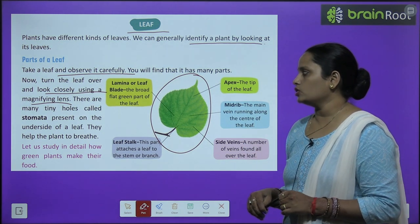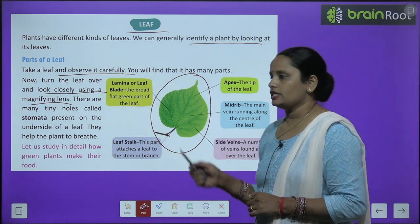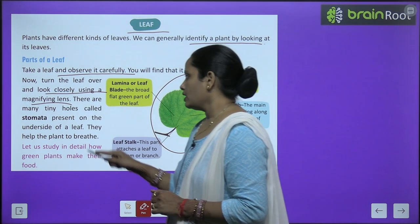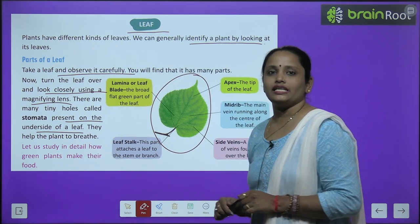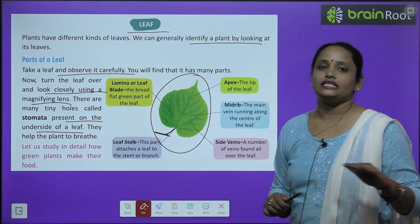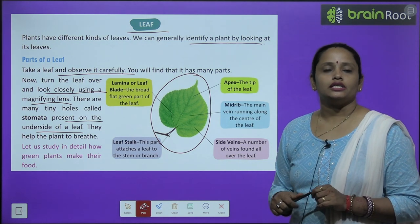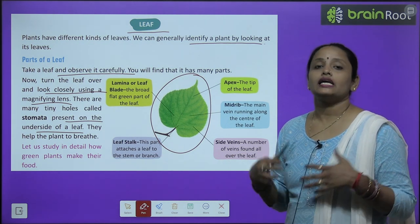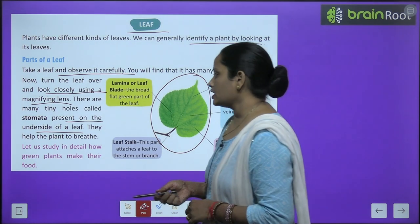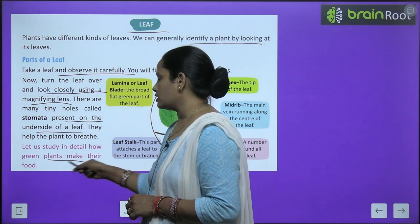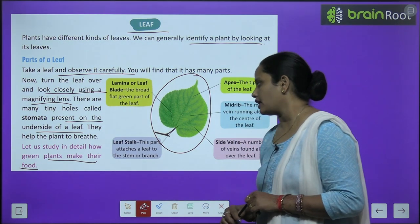There are many tiny holes called stomata present on the underside of the leaf. They help the plant to breathe. Let's study in detail how green plants make their food.